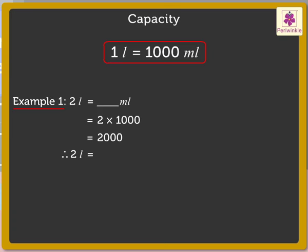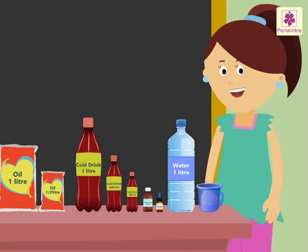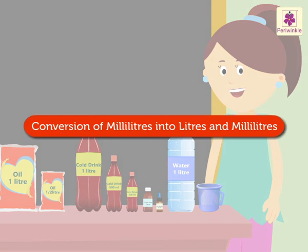Thus we get two liters is equal to two thousand milliliters. Let's try one more example. Let's convert 69 liters into milliliters: 69 into one thousand is equal to 69,000 milliliters. Thus we get 69 liters is equal to 69,000 milliliters. Now let us see how to convert milliliters into liters and milliliters.